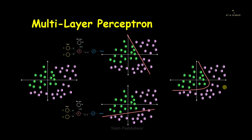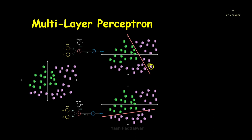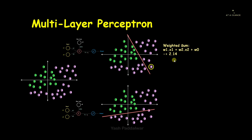Now let's see how we can do it mathematically. For a particular data point, using the finalized weights of the first classifier, we calculate the weighted sum as w1·x1 + w2·x2 + w0, where w0 is the bias. For this data point the weighted sum is 2.14, and applying the sigmoid activation function gives sigmoid(2.14) = 0.89.